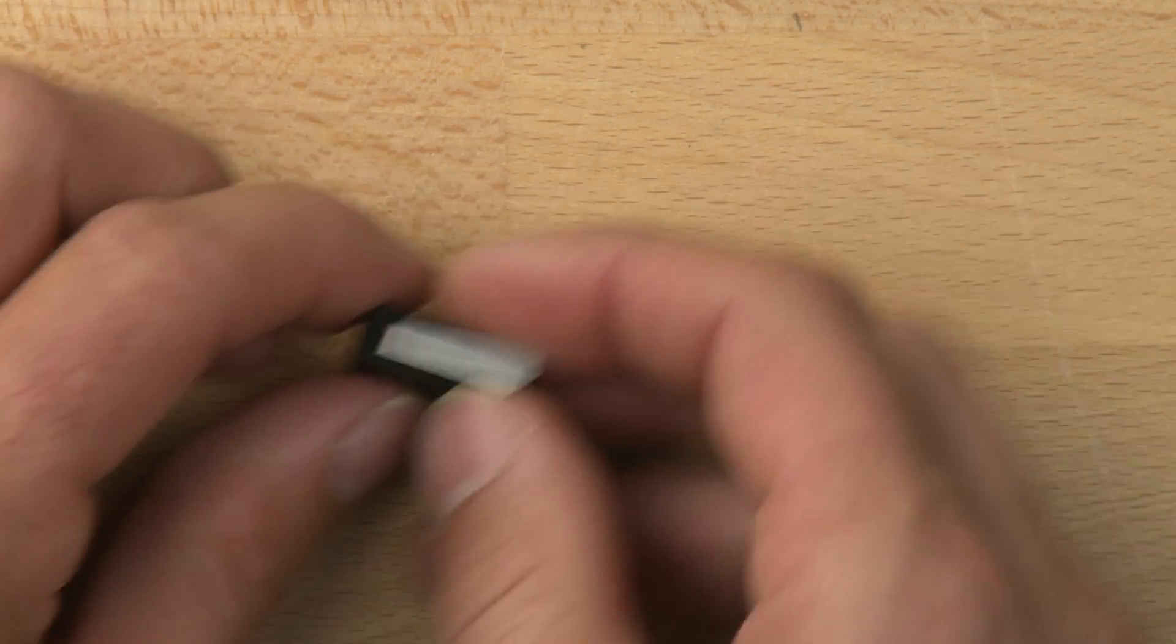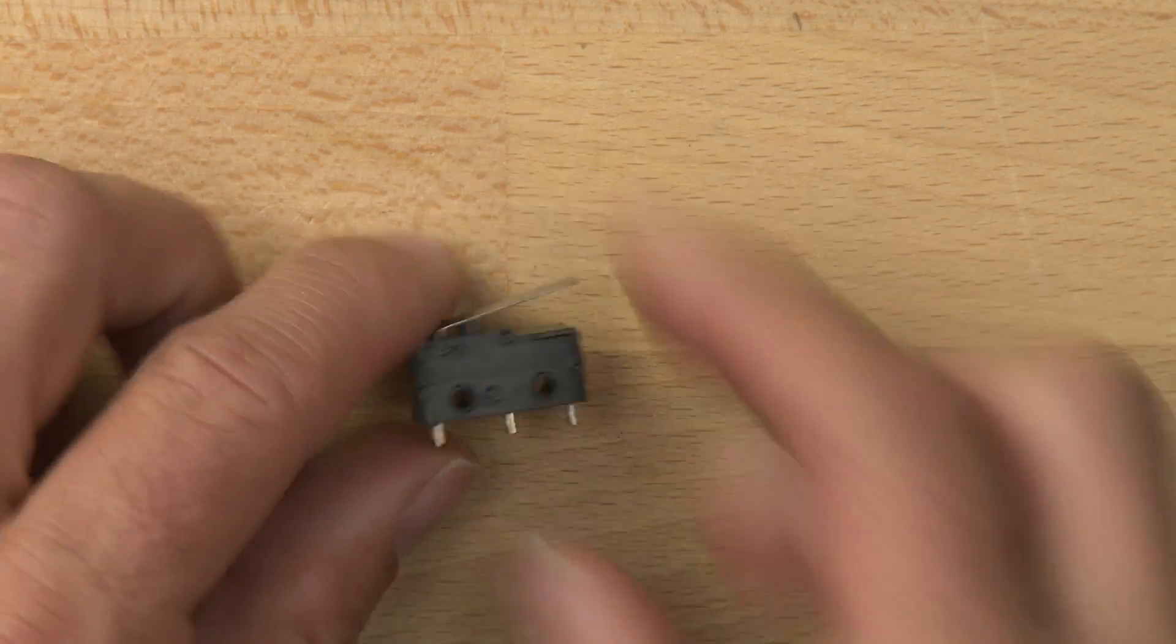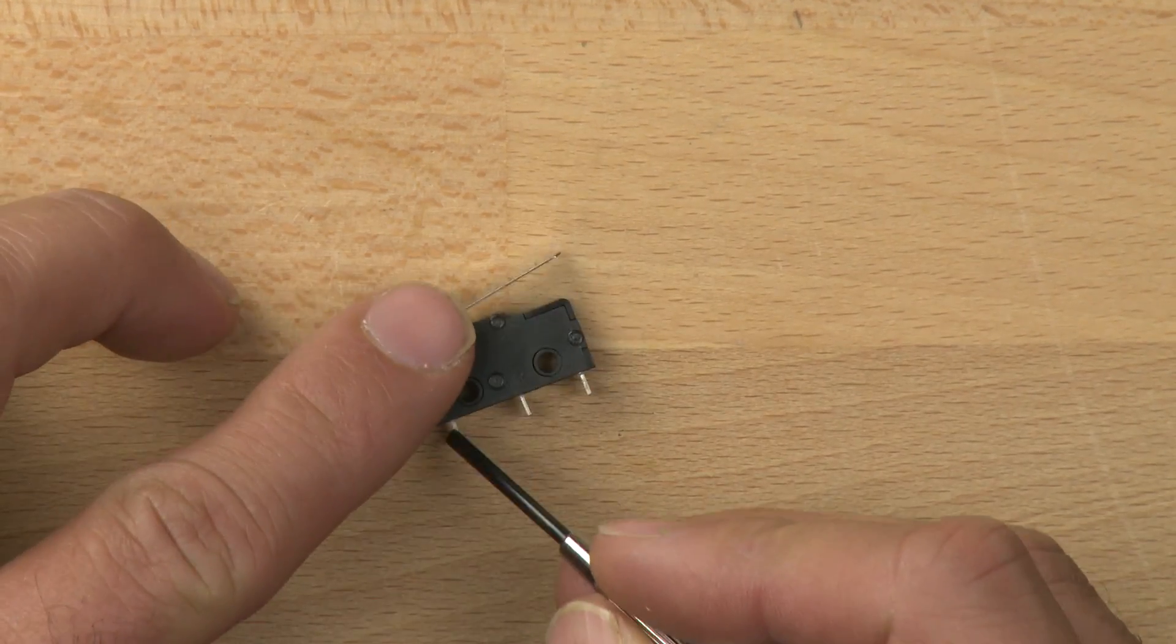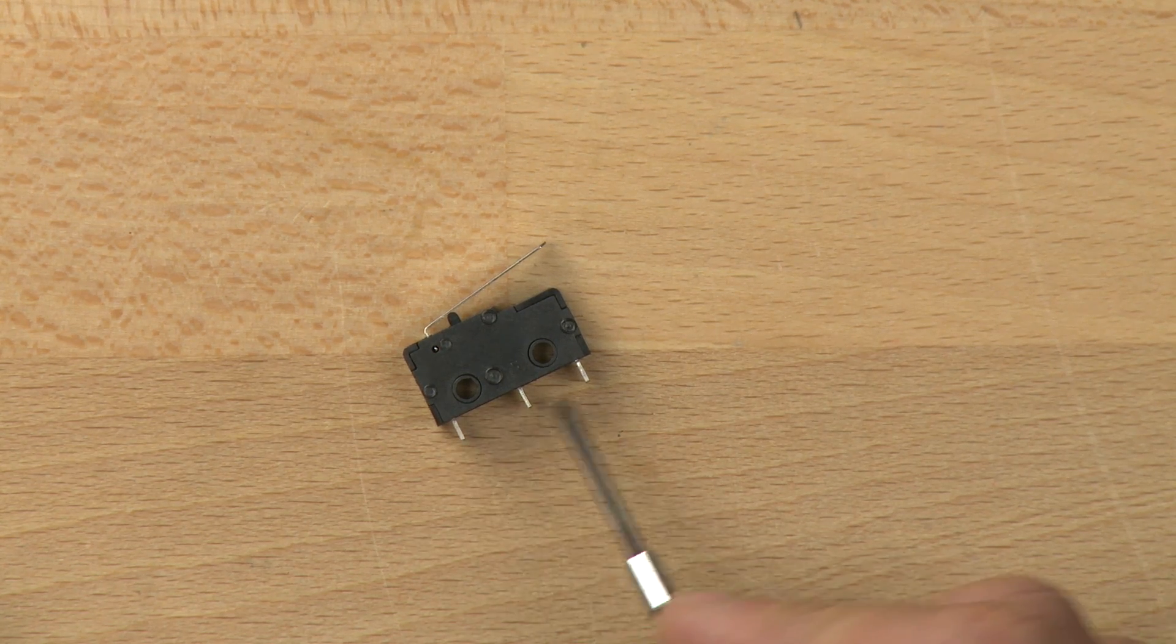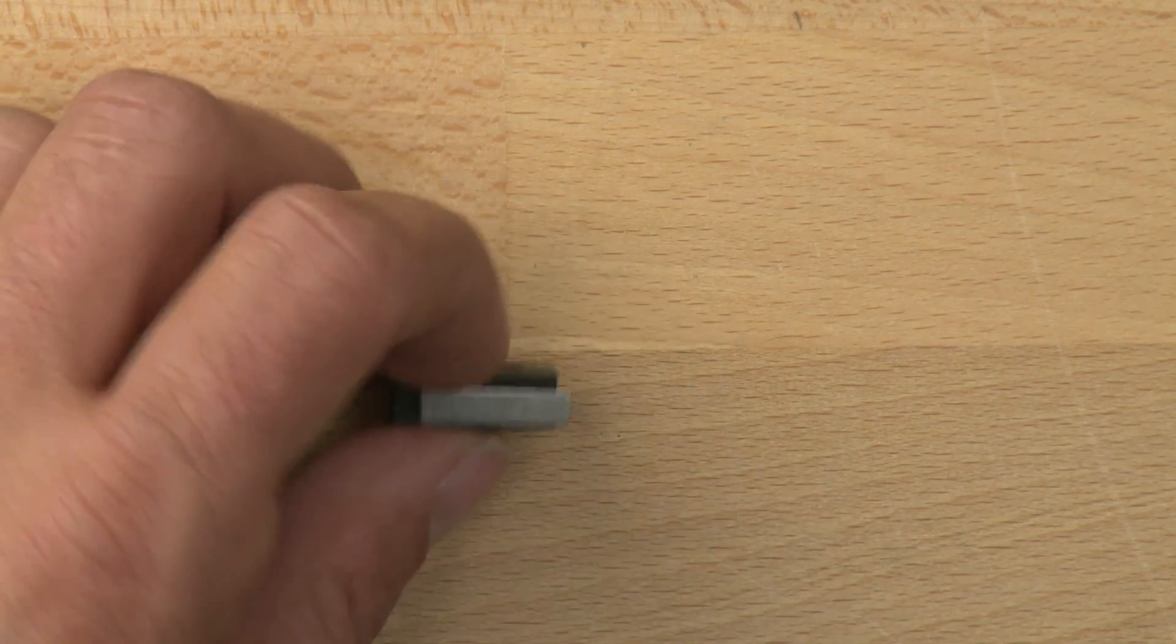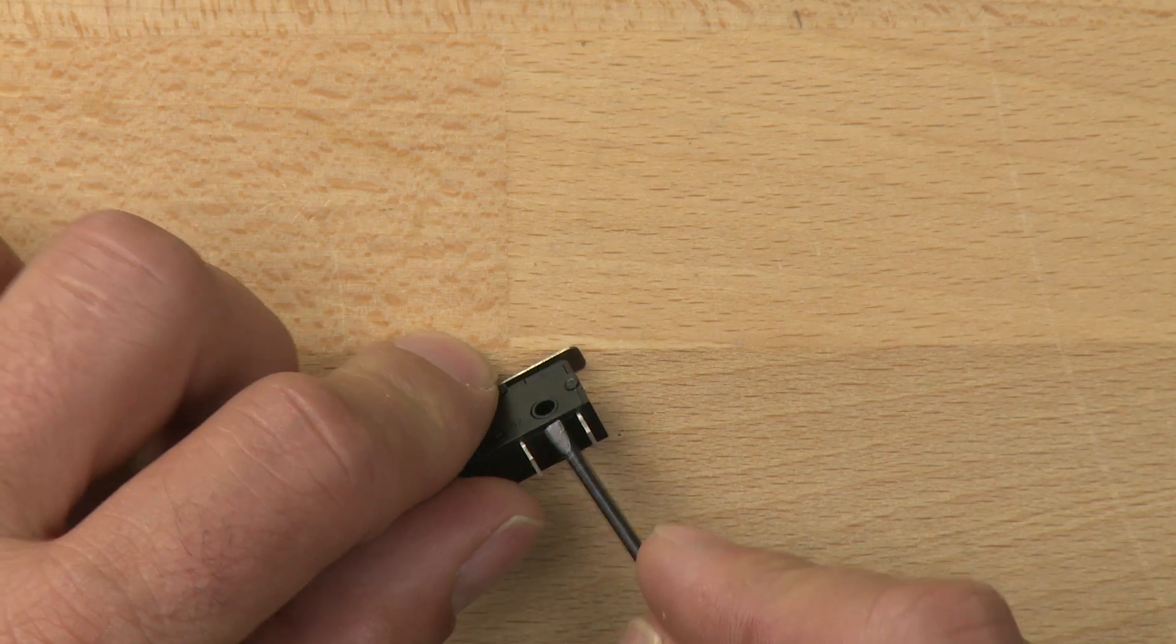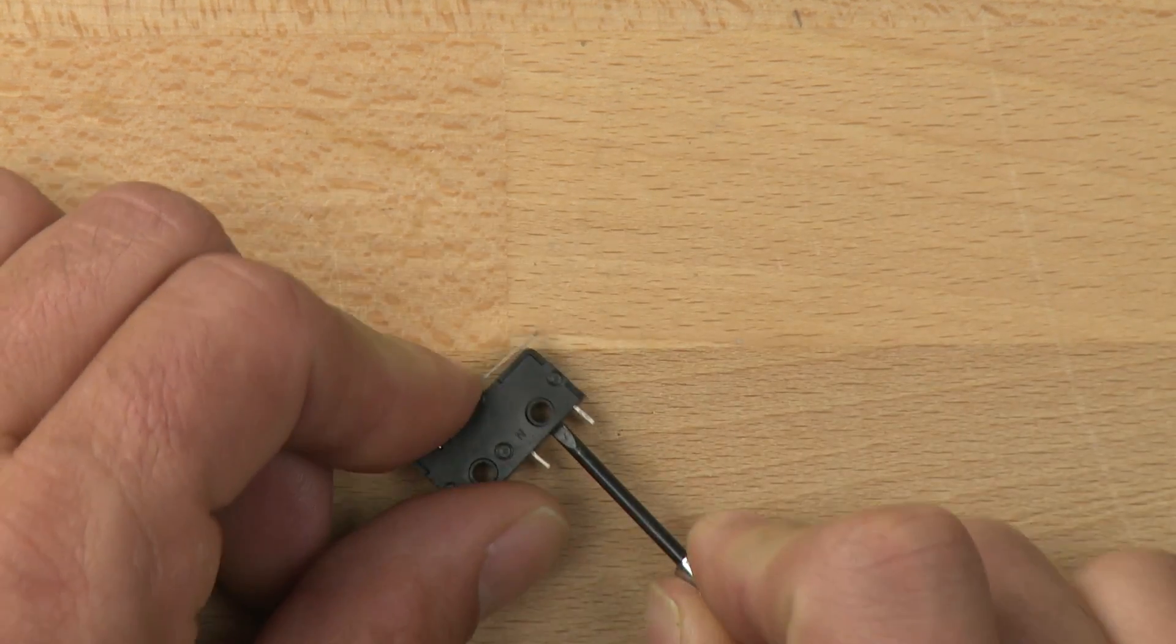We're going to take a look inside of the single pole double throw lever switch. We have one pole right here and two throws. What that basically means is that we can connect to three different locations on this switch and control the power in two circuits.